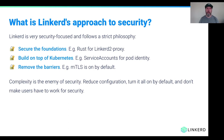Linkerd is very security-focused and we have a very strict philosophy. First, making sure that the foundations are secure — a big part of why Linkerd 2-proxy is written in Rust. Second, building on top of Kubernetes as much as possible — rather than introducing new primitives, using ones that are already there, like service accounts. And third, removing barriers as much as possible. The moment you install Linkerd and mesh your application, all TCP communication is automatically put behind mutual TLS without you having to configure anything. Complexity is the enemy of security — we want to reduce configuration as much as possible, turn it all on by default, and basically not make you have to work for security.